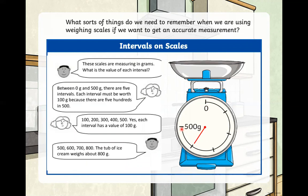So these scales are measuring in grams. We know that. We looked at that unit of measurement. What is the value of each interval? Well, between 100 grams and 500 grams there are five intervals. Each interval, therefore, must be worth 100 because there are 500s in 500. So what they've done is taken 500 and divided it by 5. 500 divided by 5 is 100. So 100, 200, 300, 400, 500. Yes. Each interval has a value of 100 grams.